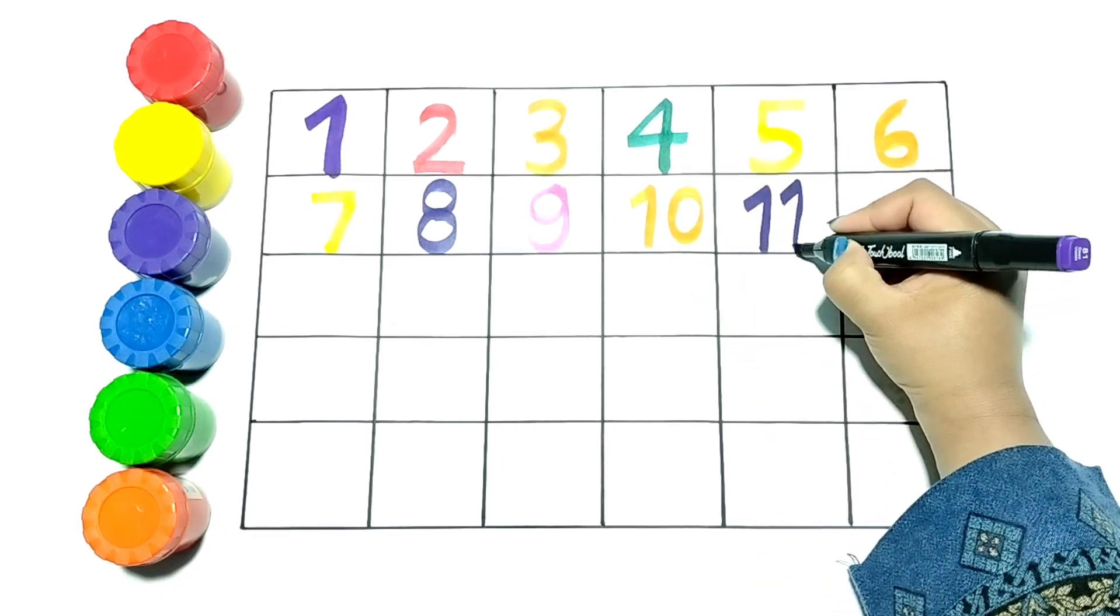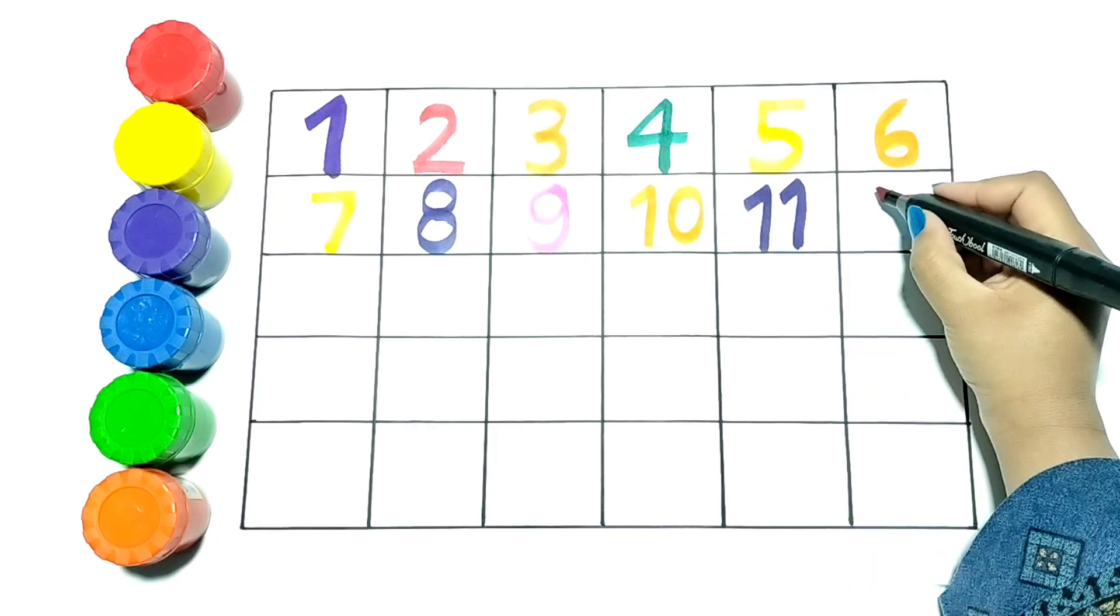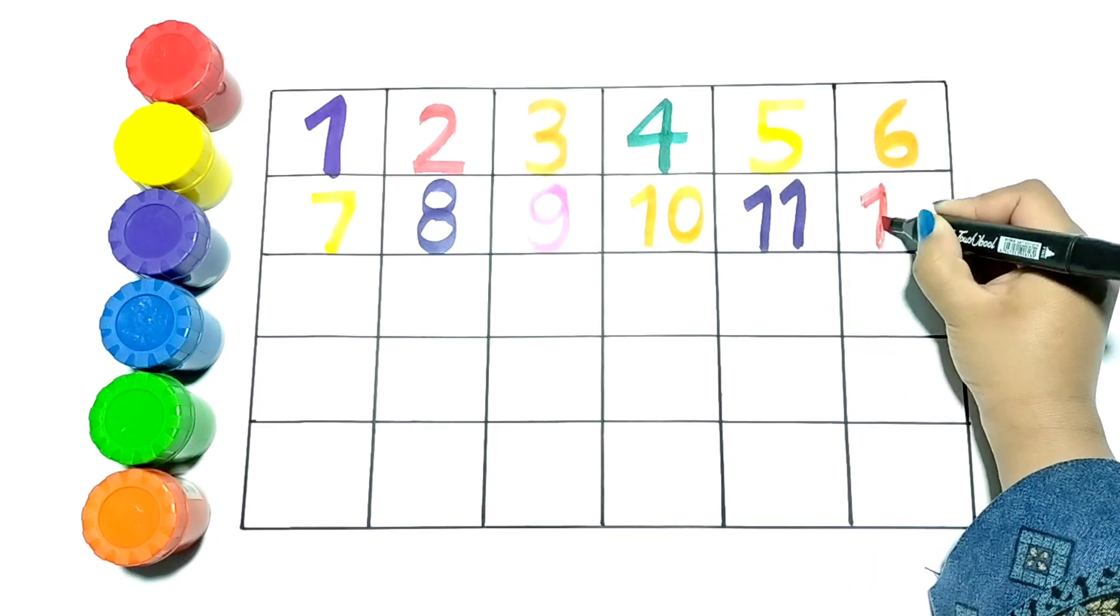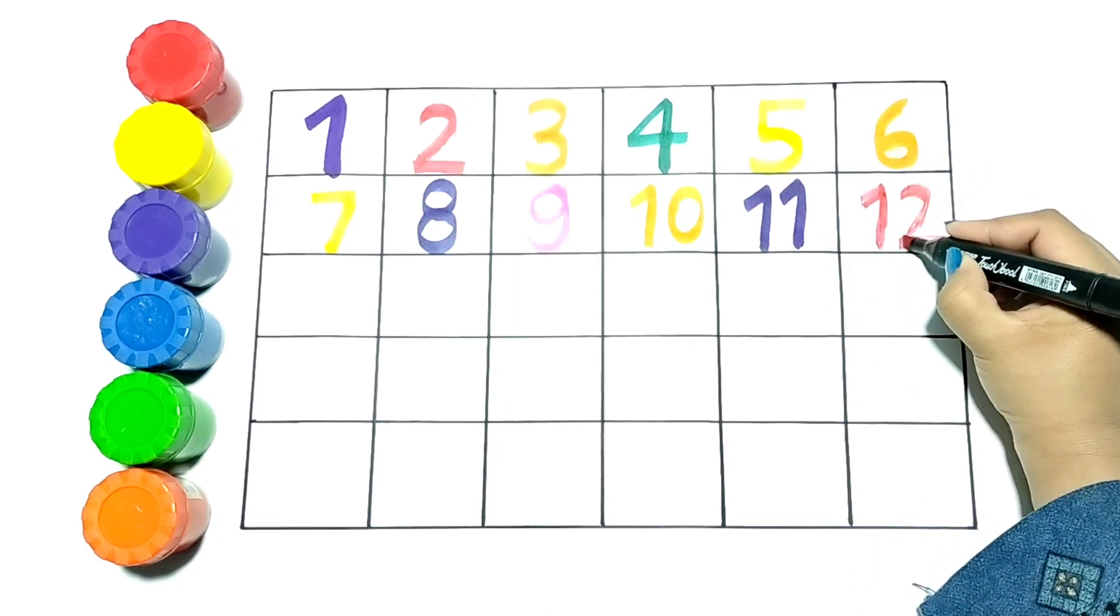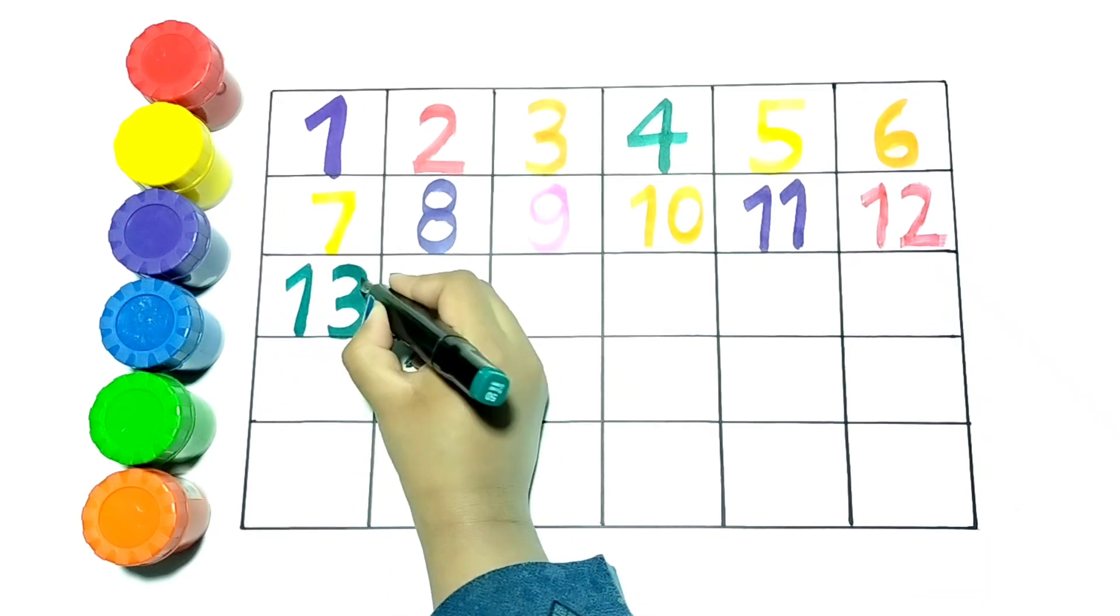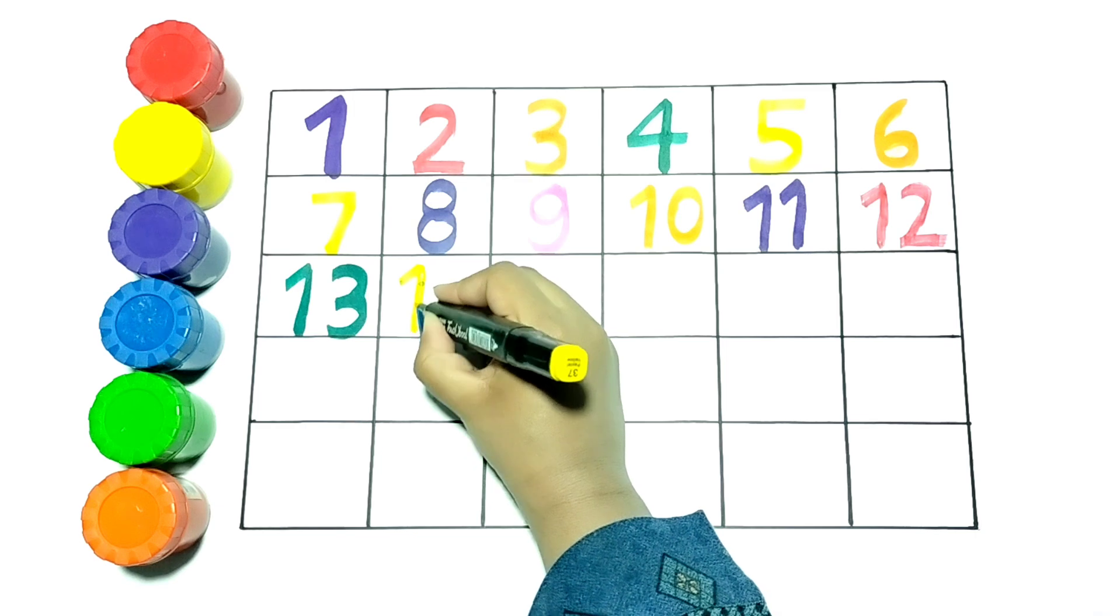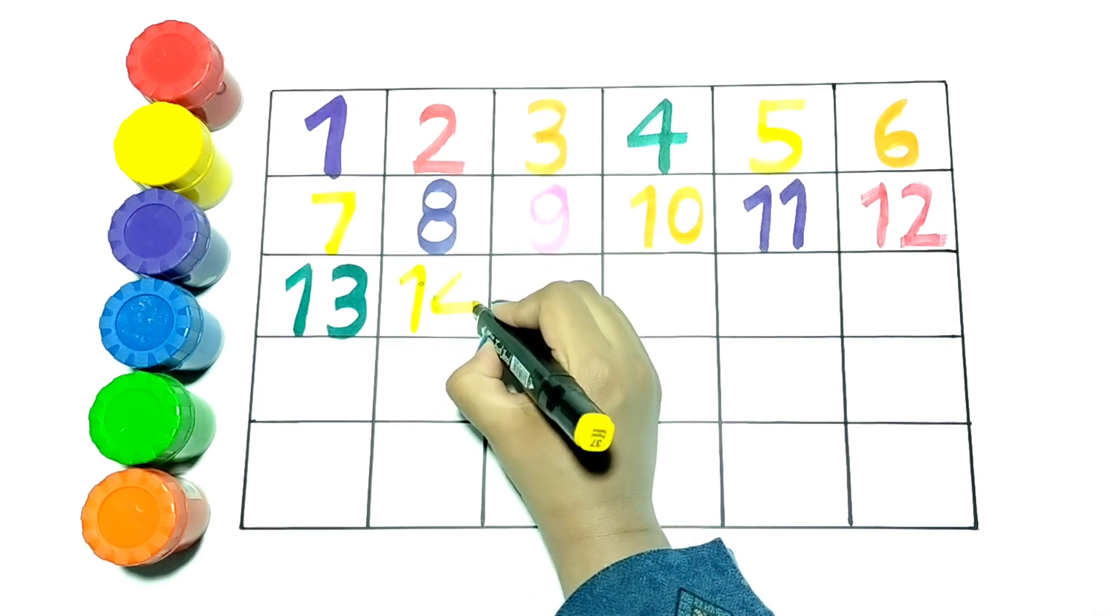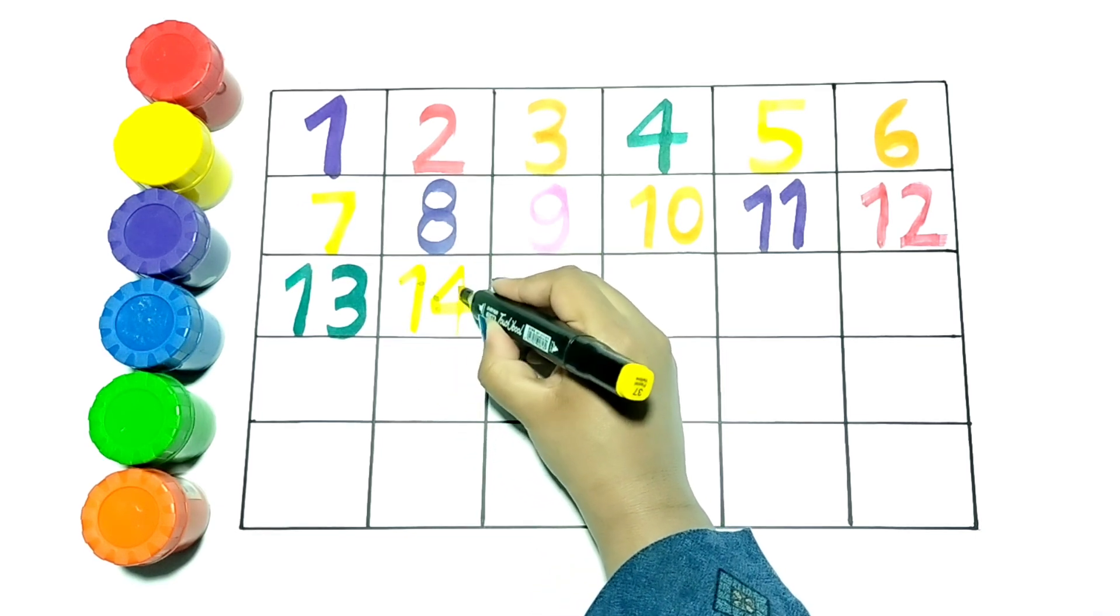Now I am writing 11. It is in purple color. Now I am writing 12. Now let's write 13. Now I am writing 14. This is number 14, it is in yellow color.